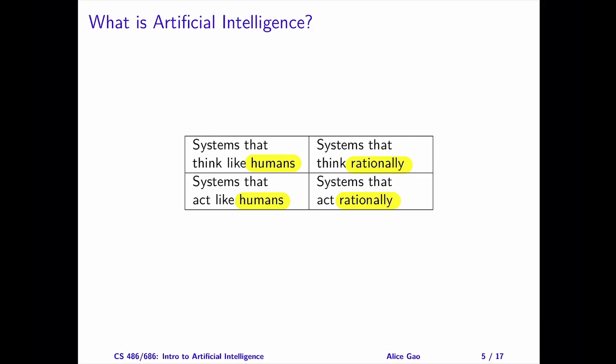Next, let's look at the two rows. The two rows differ by our goals. Do we aim to model thoughts, or do we aim to model behavior? One significant difference between the two goals is whether we can observe them. We cannot observe thoughts directly, but we can easily observe external behavior.